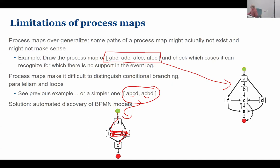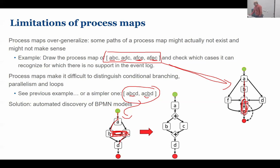Similarly, look at this example — an event log with four traces. It gives me the impression that C and E are repeated, but the truth is they are never repeated. I either see E and C or C and E, but I never see C, E, C, E. Process maps sometimes give the illusion that there is repetition, but in fact there is parallelism.